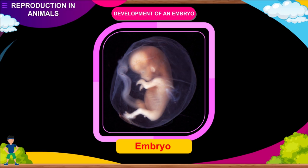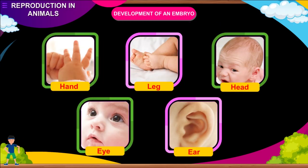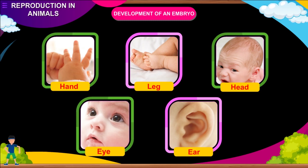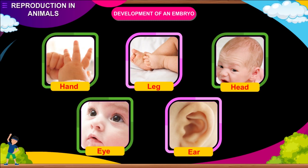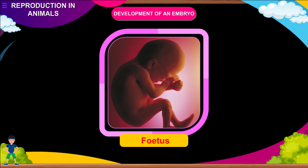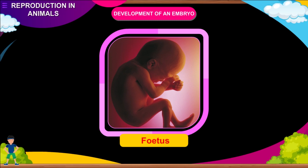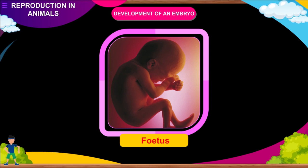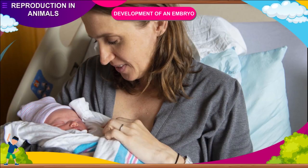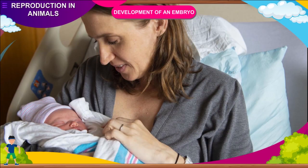The embryo gradually develops body parts such as hands, legs, head, eyes, ears, etc. The stage of the embryo in which all the body parts can be identified is called a foetus. When the foetus is fully developed, the mother gives birth to a baby.